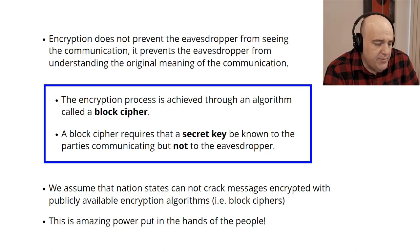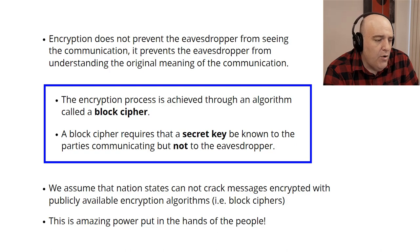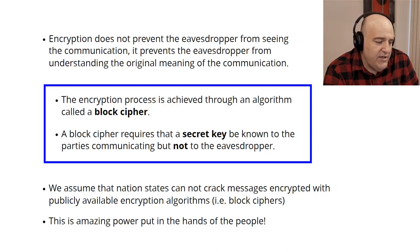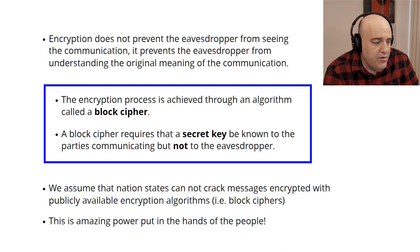The encryption process is achieved through an algorithm called a block cipher. The block cipher requires that a secret key is known only to the parties communicating, not to the eavesdropper. This is critical. Even though nation states have great computing resources available, they are still unable to crack messages encrypted with publicly available encryption algorithms — namely block ciphers. This is actually amazing power put in the hands of the people.